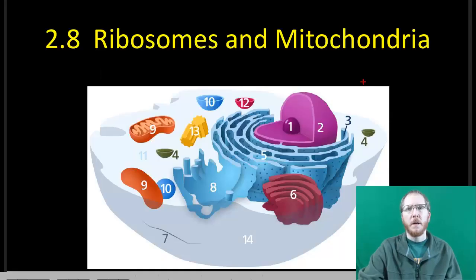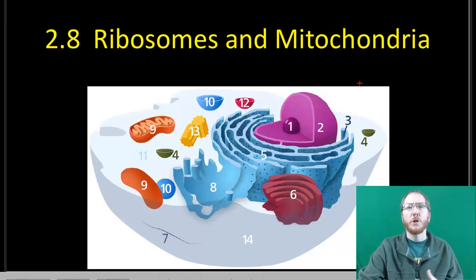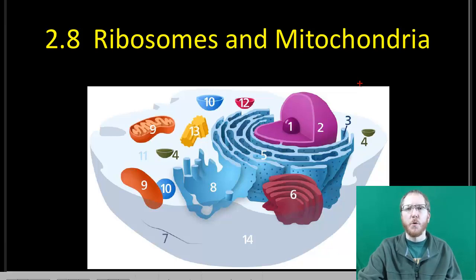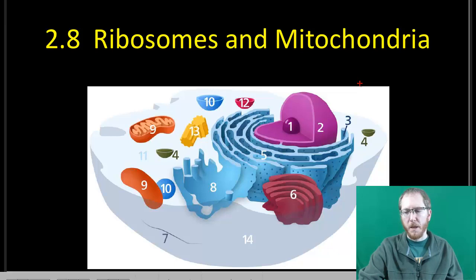Welcome to Section 2.8. During this section, we're going to talk about ribosomes and mitochondria, which are two of the more talked-about organelles. They might be fairly important compared to some of the others, but all organelles tend to do their job. These are just some of the more common ones they discuss — the ones we make a bigger deal about.